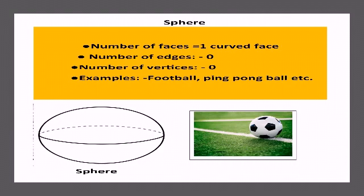A cone has only one vertex at the top. Examples of a cone include ice cream cone, birthday cap, and traffic cone. So the cone has 2 faces — one curved and one plane — one circular edge, and one vertex at the top.